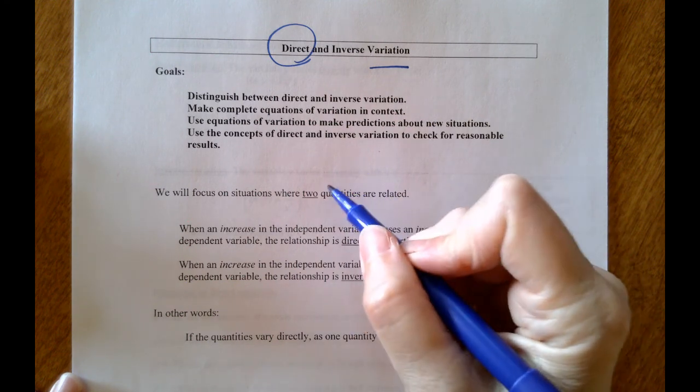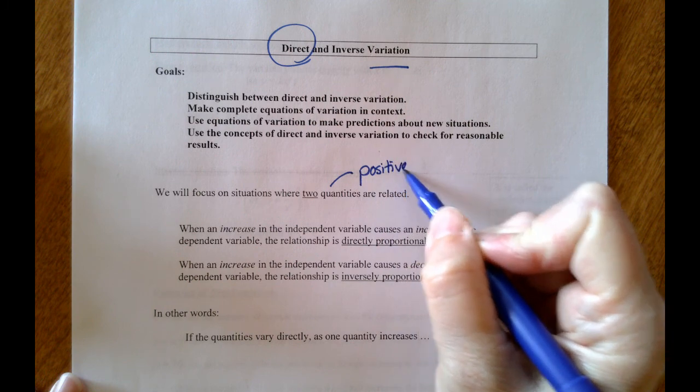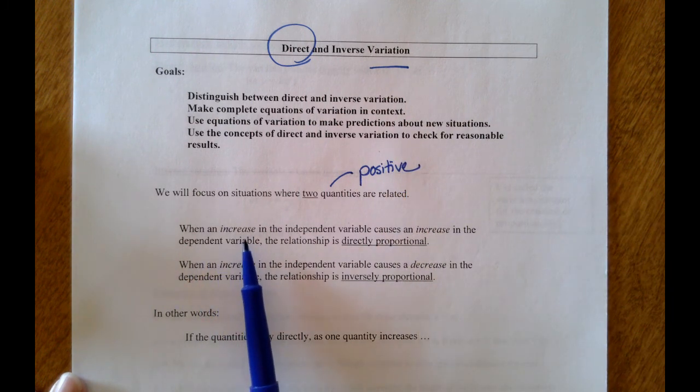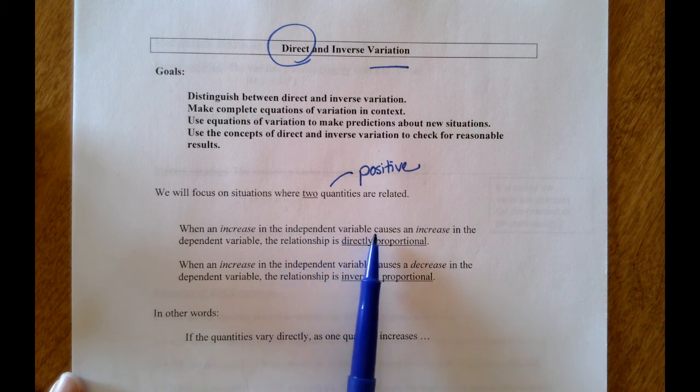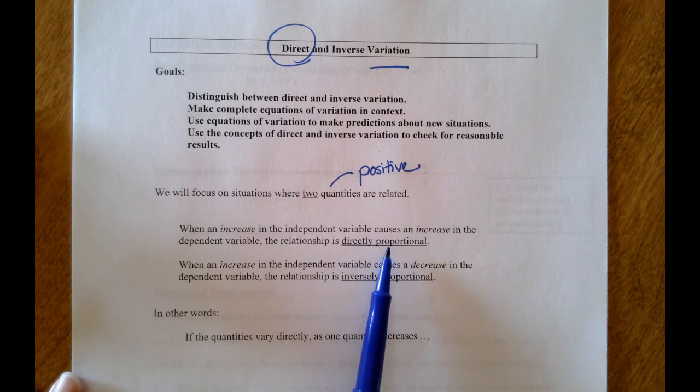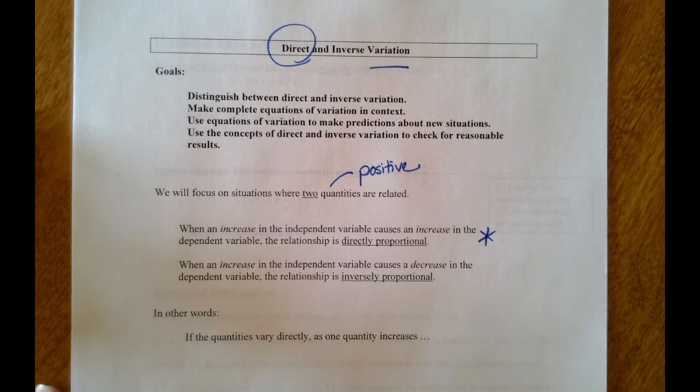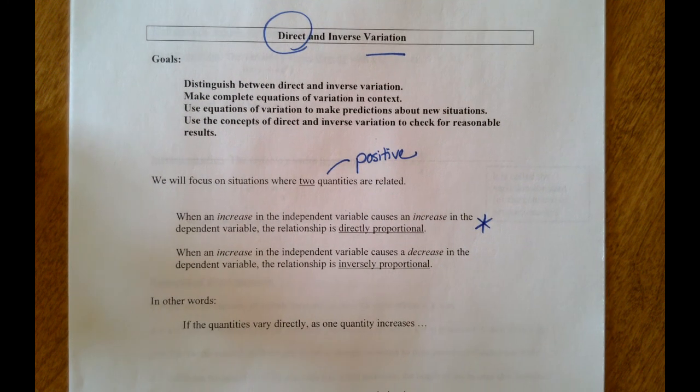I do want to also include in here that the quantities will both be positive for us in this class. When an increase in the independent variable causes an increase in the dependent variable, the relationship is directly proportional or varies directly. That's what we're going to focus on today.